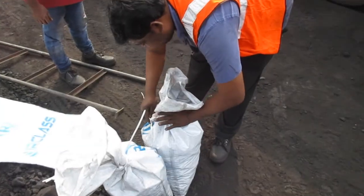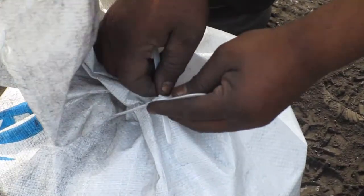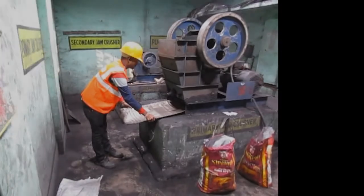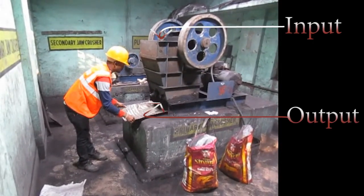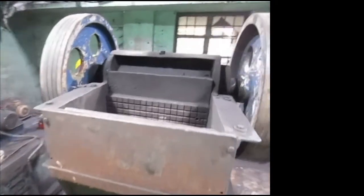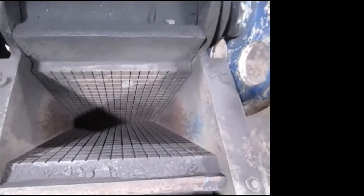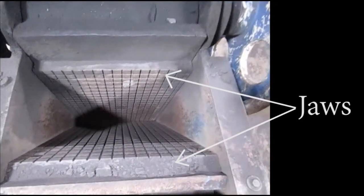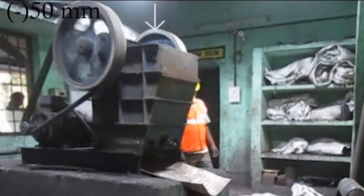Samples are sealed using tags and transported in a tamper-proof manner to the coal sample preparation room. A jaw crusher, also called the primary crusher, can reduce the size of the coal samples to less than 50 millimeters.